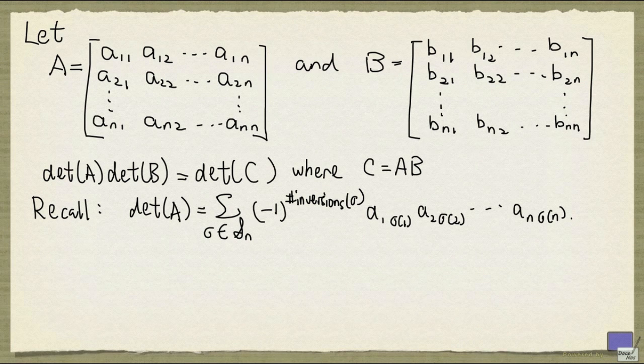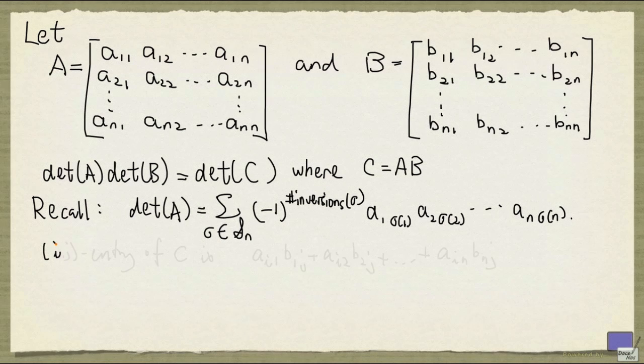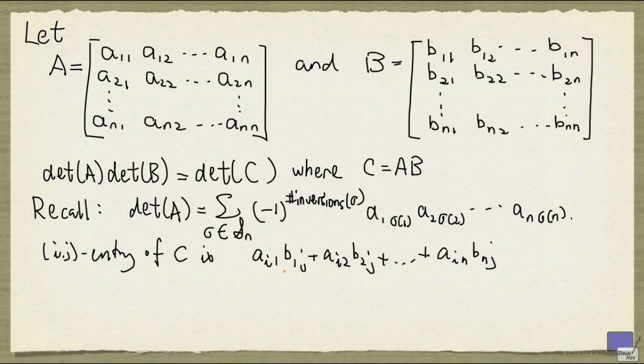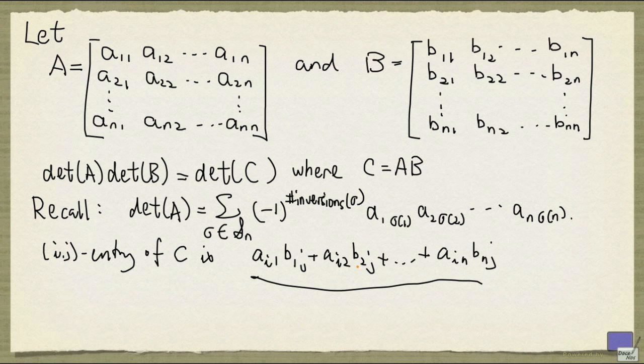First note that the ij entry of C is the following. Now if we apply this definition of the determinant of C, each of these A's will actually look like this. So each one is going to be a sum of n terms.